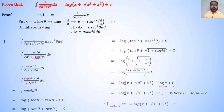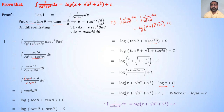For example, ∫1/√(4+x²)dx = ∫1/√(2²+x²)dx. It looks like ∫1/√(a²+x²)dx with a = 2. The answer is log|x + √(4+x²)| + c.